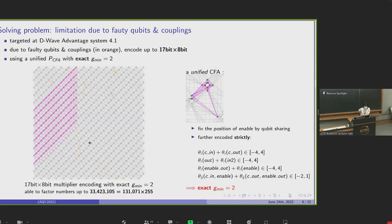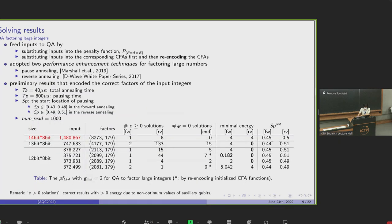In our experiments, we targeted D-Wave Advantage 4.1, as shown in orange. There are some faulty qubits and couplings. So we encode up to 17-bit times 8-bit using a unified penalty function of controlled full adder with exact gap. This exact gap is guaranteed by fixing the position of the enable variable by qubit sharing and imposing strict constraints on the shared qubit and the co-overlapped coupling. Here are some preliminary results that encode the correct factors of the input integers. We use two initialization methods to fit inputs to the annealer. One is to substitute the inputs directly to the penalty function. The other is to first substitute the inputs into the corresponding controlled full adder and re-encoding the controlled full adder.